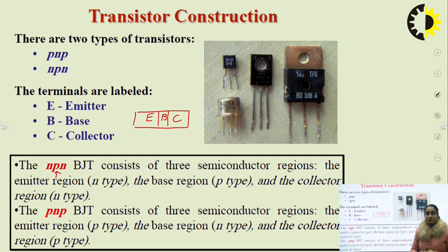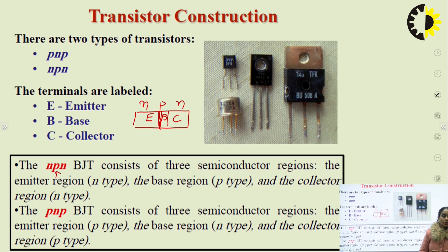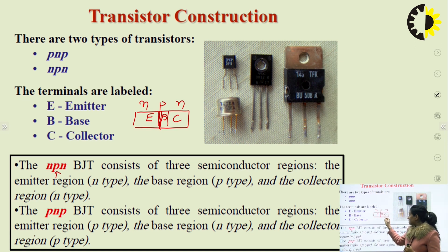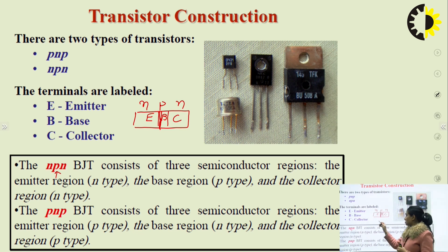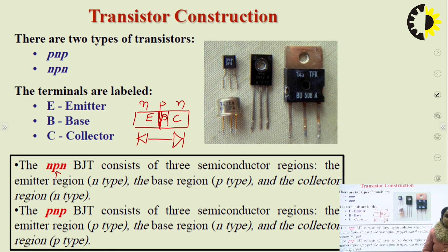In NPN, P-type semiconductor is sandwiched between two N-type semiconductors. In PNP, N-type semiconductor is sandwiched between two P-type semiconductors. If we closely observe, the junction between emitter and base looks like a PN junction diode, and similarly the collector-base junction. So it looks like there are two PN junction diodes.